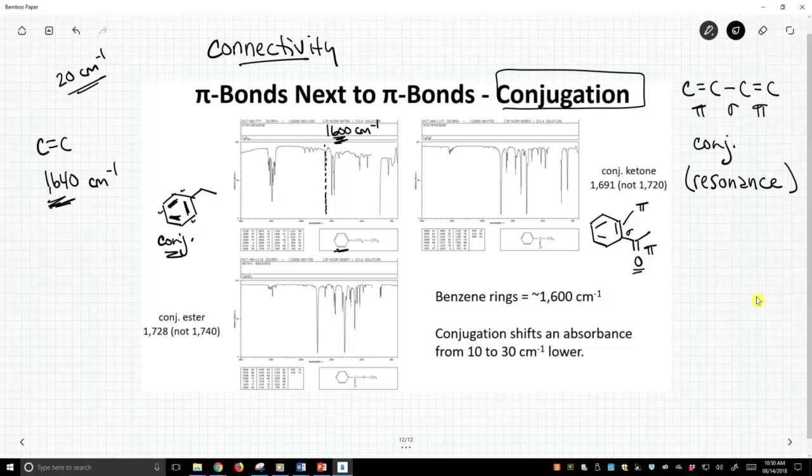We learn ketones normally show up at 1720 in an earlier video. Where is this ketone? It's at 1691. There it is, nice and big and strong, just like a ketone should be, but it's actually below 1720.